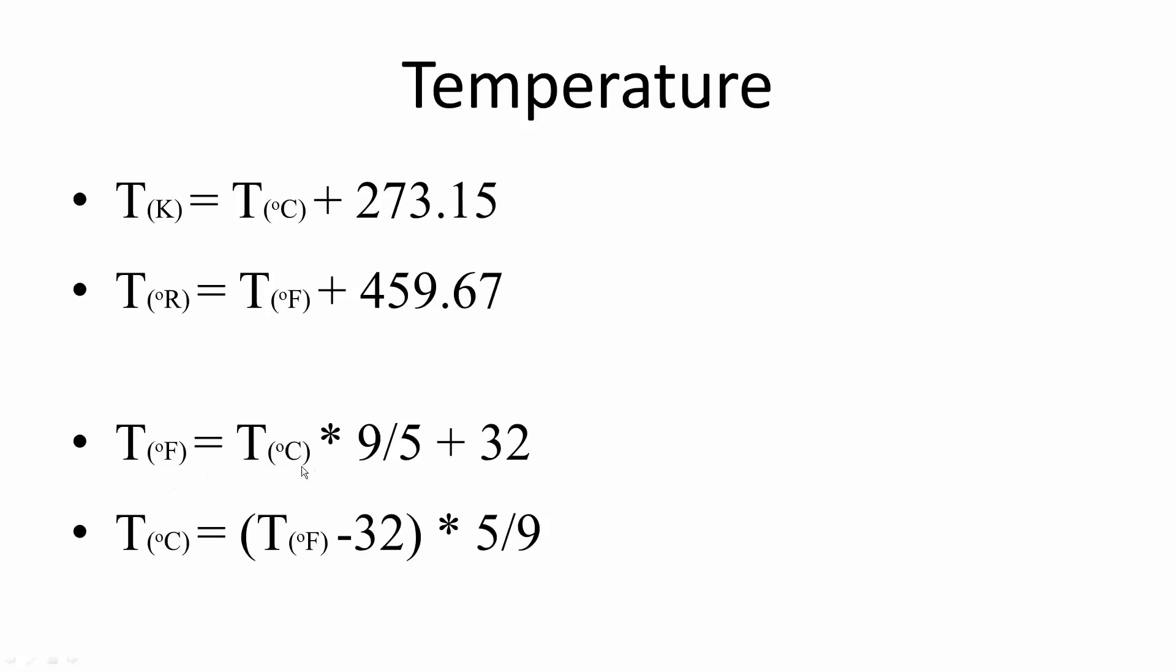Likewise, if we have Celsius and want to convert to Fahrenheit, we take Celsius times 9/5 plus 32. And lastly, if we have Fahrenheit and want to convert to Celsius, we do the temperature minus 32, in parentheses, times 5/9. In the next couple of videos, we will solve problems.